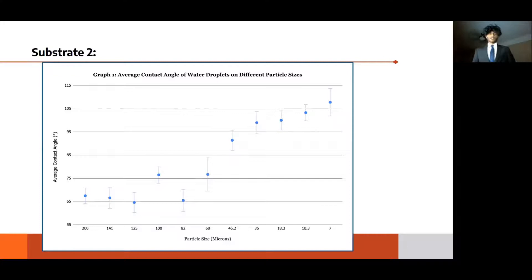Each of these data points are an average of 20 trials per micron size. There is an observable upwards trend such that as the particle size decreases and the sandpaper is more fine, the contact angle increases. As compared to the control of 79.7 degrees, the silicone molds that were imprinted on finer grits of sandpaper had greater contact angles and were thus more hydrophobic.